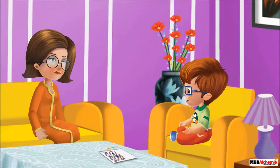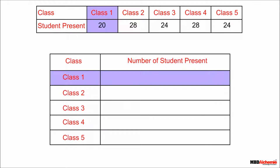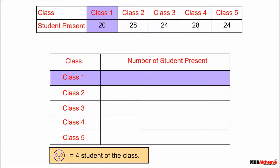Neil tells his mother that he wants to draw a pictograph for the students who were present that day in all the classes. He finds that the number of present students in different classes is large — to represent class 1 alone, he would need 20 pictures, requiring a very big table. Neil asks his mother how this data can be represented in a pictograph. She explains that to overcome this situation, we need a key.